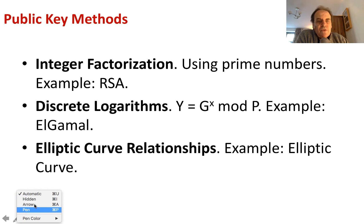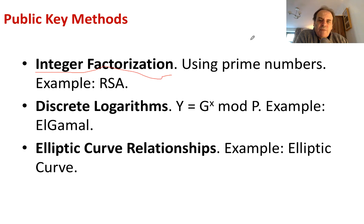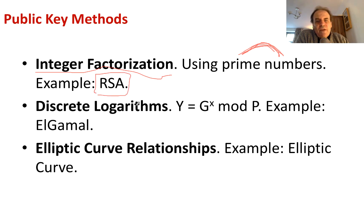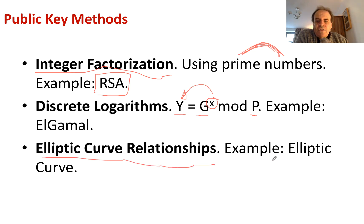The three main methods for public key encryption are: integer factorization, where we take two prime numbers, multiply them together, and the difficulty is to factor them back again — the main method here is RSA; discrete logarithms, where the difficulty is finding the value of X even though we know G and P to give a resulting value of Y; and elliptic curve, which is used in things like Tor and networking, and many IoT devices use elliptic curve because it tends to use less processing power than RSA and much less memory.